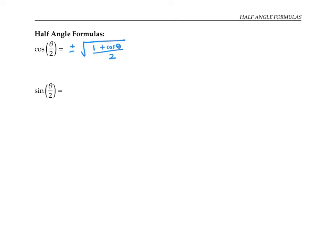We have a similar formula for sine of theta over two, and that's plus or minus the square root of one minus cosine theta over two. Notice that the formulas for both cosine of a half angle and sine of a half angle both have cosine in them — they just differ by the positive or negative sign inside the square root.